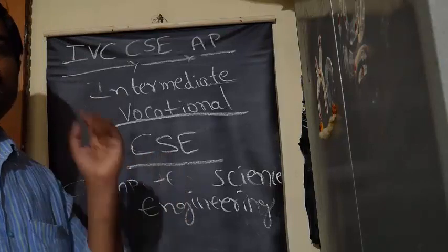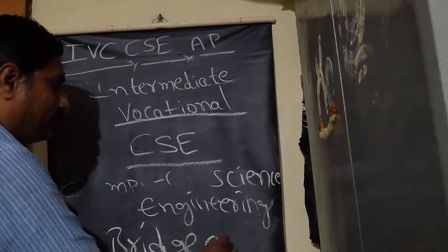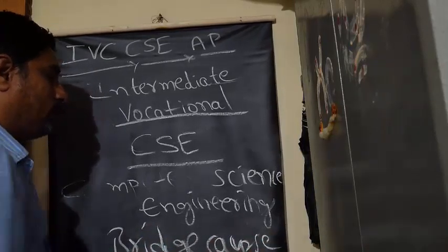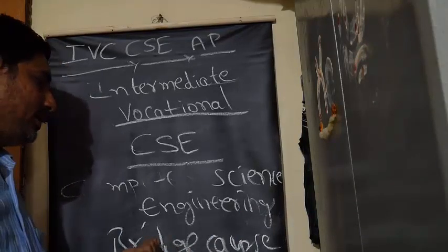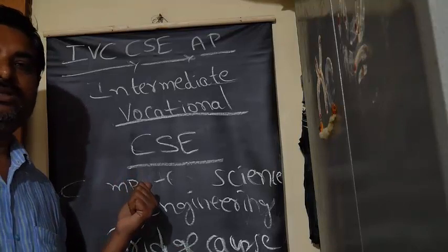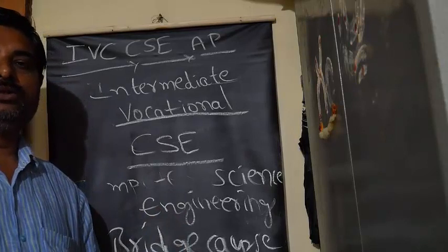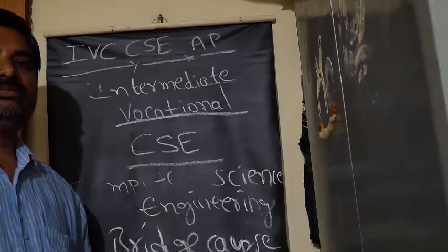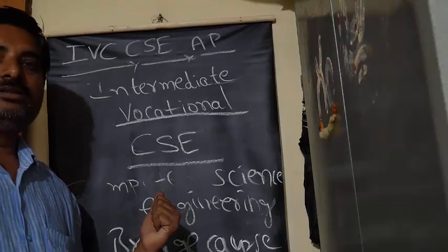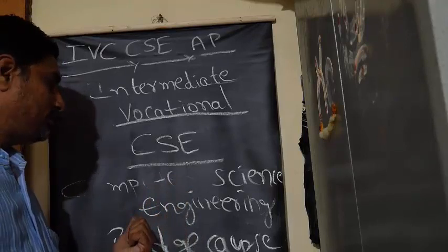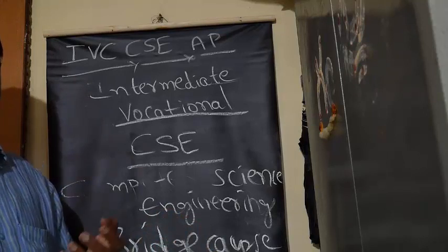All engineering course students are eligible to write the bridge course. The bridge course means you have to additionally write Math, Physics, and Chemistry alongside your regular subjects. With this bridge course, you may be eligible to pursue B.Tech, B.Sc Computer Science, or BTEC. Taking vocational computer science engineering gives you so many ways to move forward in your life.